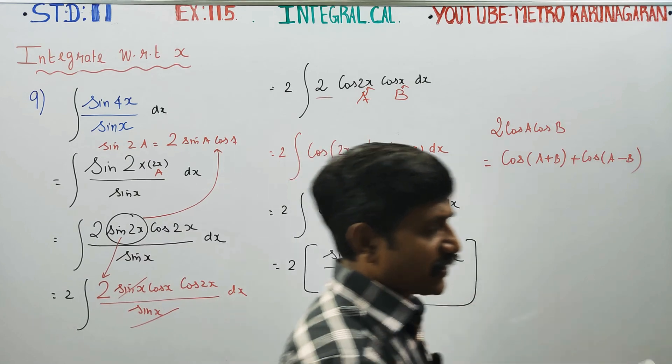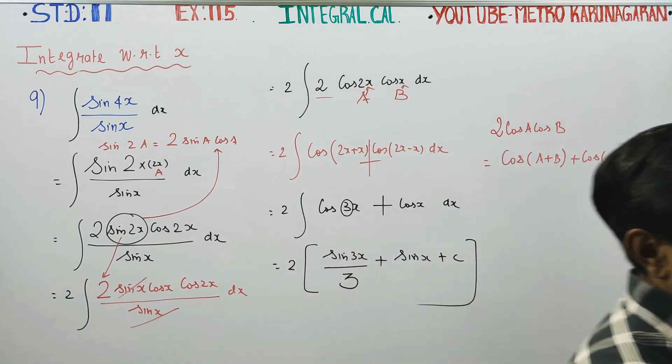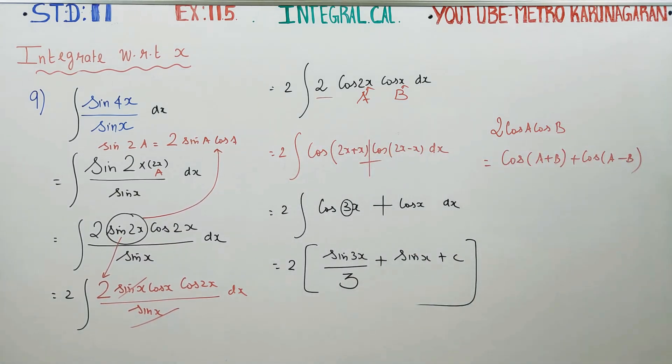Remember not to forget the constant C. Note that 2 times C is still a constant. Do not make mistakes with this problem. Thank you.